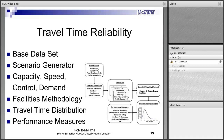Travel time reliability looks at generating hundreds of scenarios based on changes in demand, weather, incidents, special events, and work zones that might come into play as things vary across the year. You get a distribution — as shown in the lower right — of what the travel time index might look like. Travel time index, briefly, is the travel time for a given scenario compared to free-flow travel time at, say, 2 in the morning. As that index varies, so does reliability.